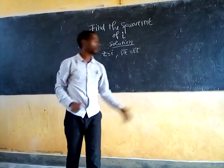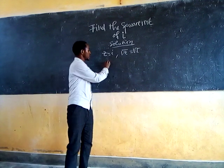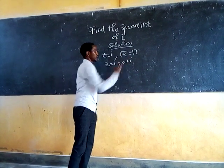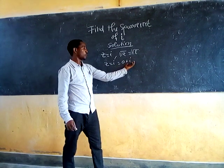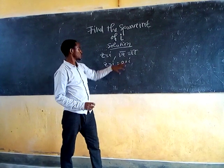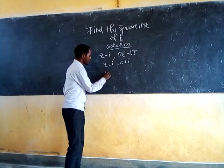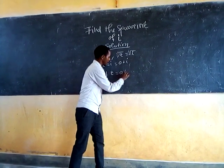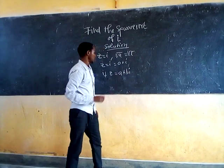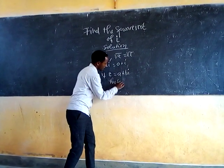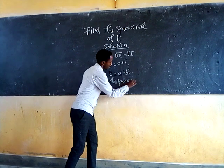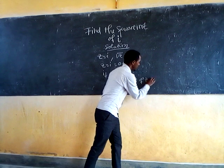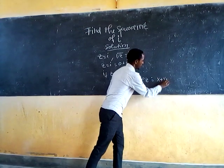How to find the square root of a complex number? Since z equals i, we can write it as 0 plus i, so a equals 0 and b equals 1. If z equals a plus bi, then the square root of z equals x plus yi.